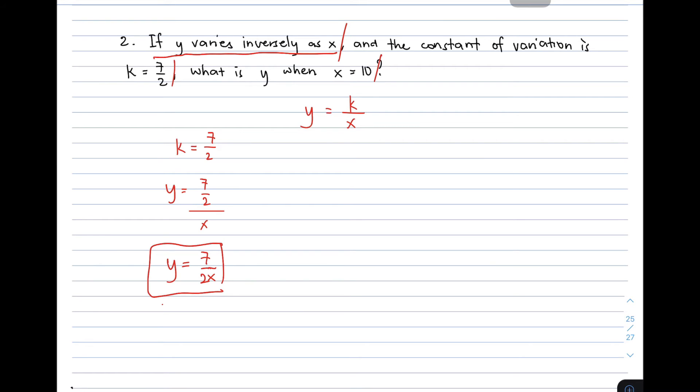Now we're ready to find the value of y. Find y. Using this equation, y is equal to 7 over 2x. Your x is equal to 10. So we only need to substitute the value of x. You have y is equal to 7 over 2 times 10. You have y is equal to 7 over 20. That is a simplified form already.